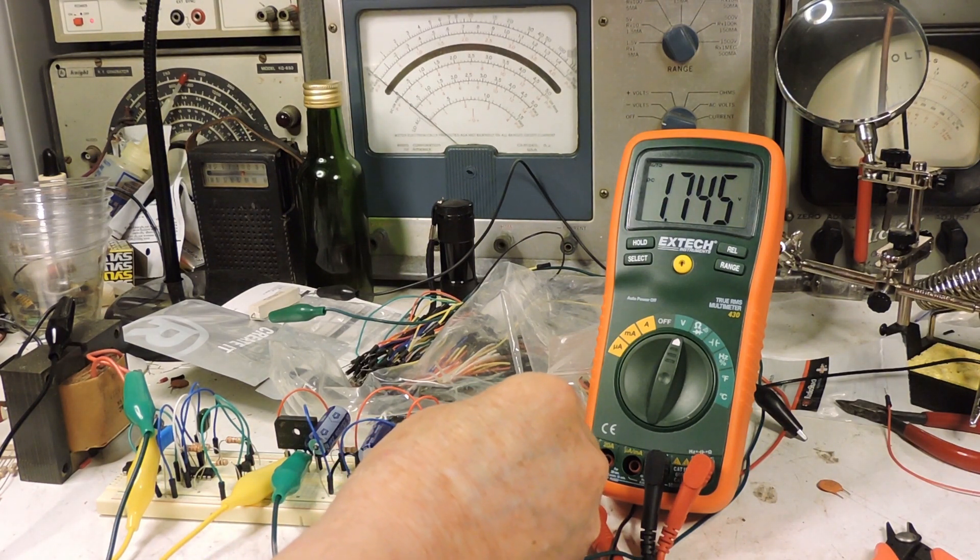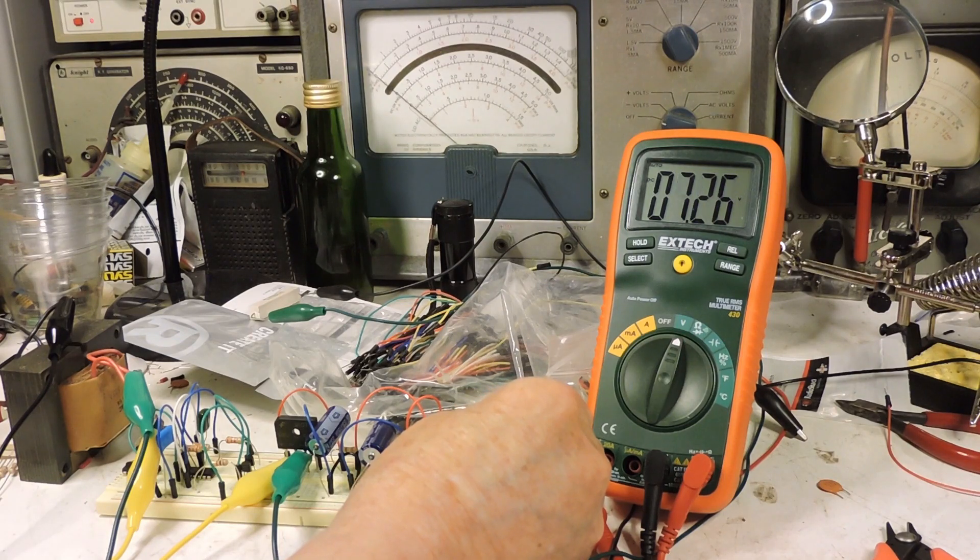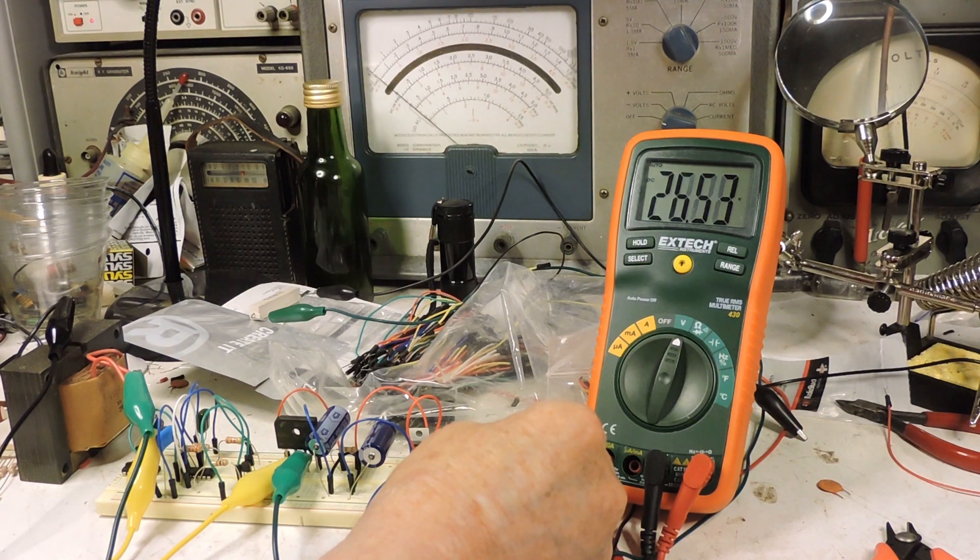And now I'm going to increase the resistance of that 100k resistor. And you can see that the voltage is increasing. And what I'm shooting for is about 35 volts is what I'm thinking that I'm going to want at this time.